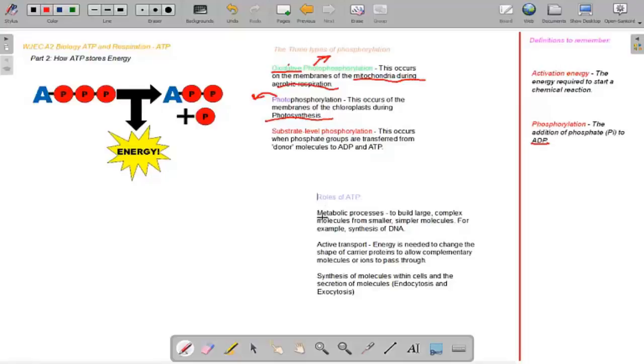The roles of ATP are metabolic processes, active transport and the synthesis of molecules within cells. So metabolic processes would be to build new muscle tissues, synthesize DNA, divide cells in processes like mitosis.